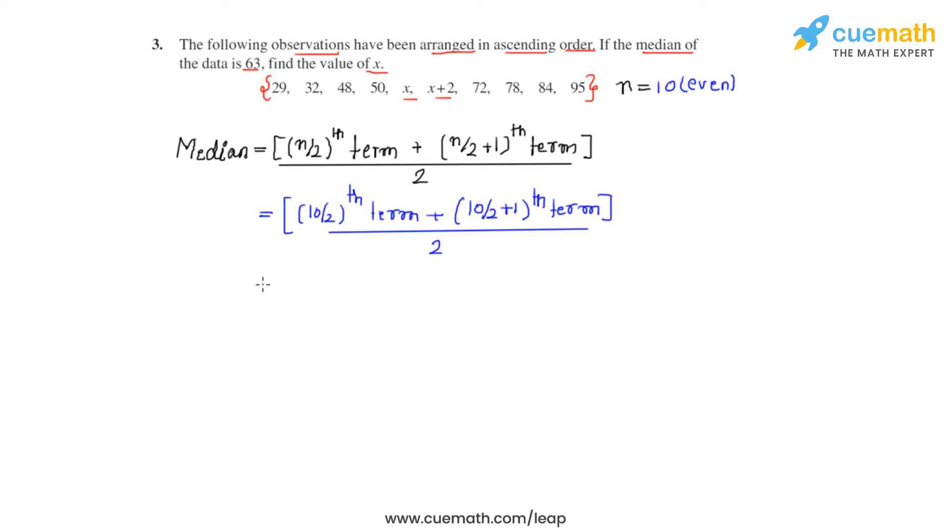We get that as the 5th term and the 6th term. So, we add these two terms and we will have to divide the sum by 2. From the arranged set of data, we get the values of the 5th term and the 6th term as x and x plus 2, respectively.